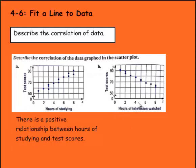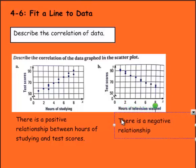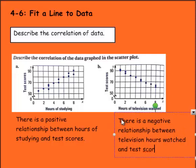Here we have hours of television watched and test scores, and here I see a negative slope. So this would be a negative relationship, meaning that the more hours of television that you watch, the lower your test scores are going to be. So there is a negative relationship or correlation between television hours watched and test scores.